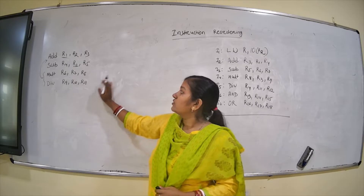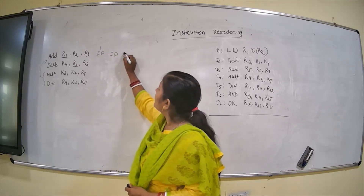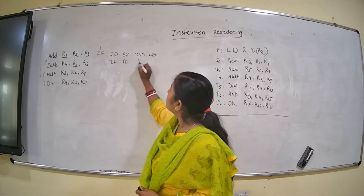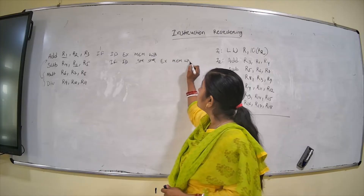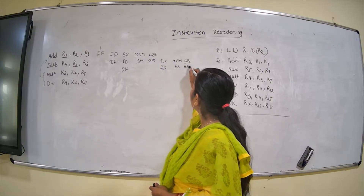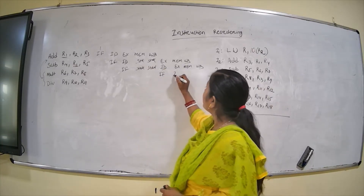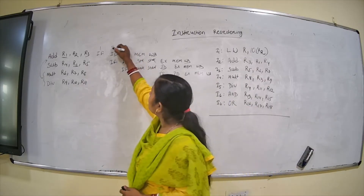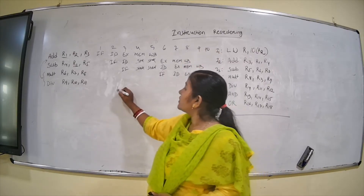First, draw the time-phase diagram to see that there are two stalls. The pipeline stages are: IF, ID, stall, stall, then EX, memory, write-back. How many clock cycles are required? 1, 2, 3, 4, 5, 6, 7, 8, 9, 10 — so 10 clock cycles are required.